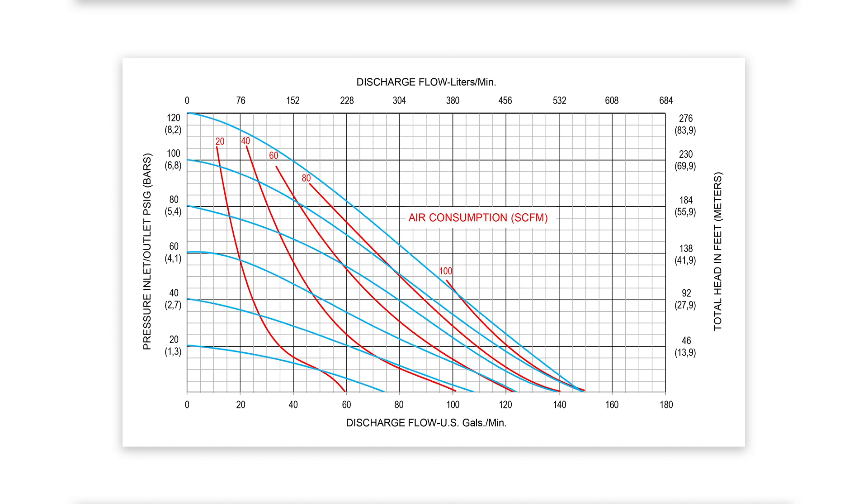AllFlow's AODD pump performance curves are made up of three axes: a horizontal axis, a vertical axis, and a curved axis. Let's dissect the elements of each one.